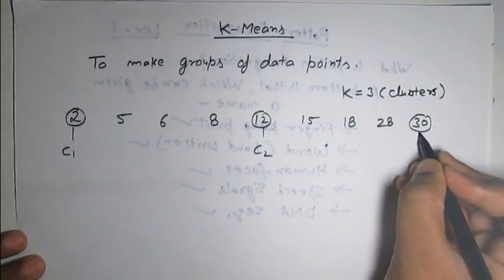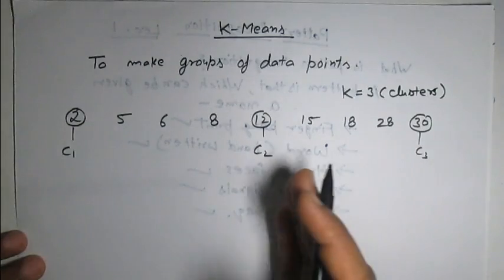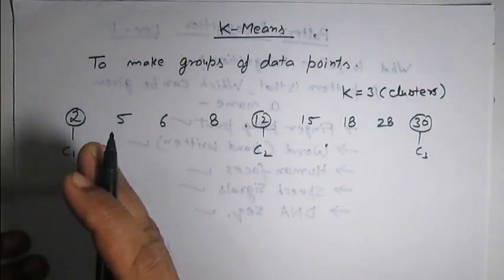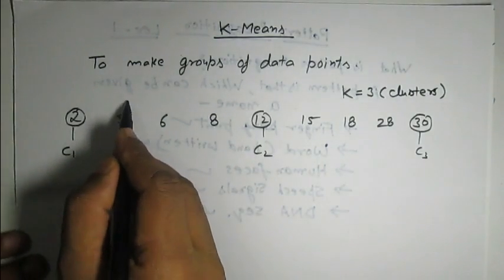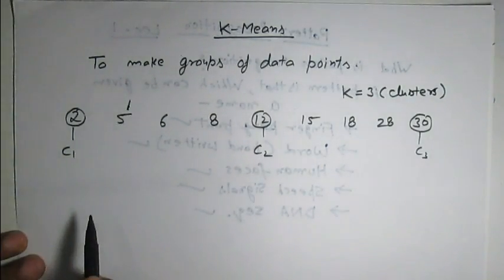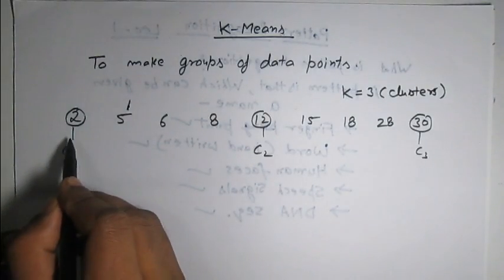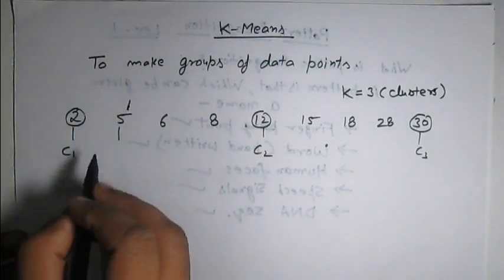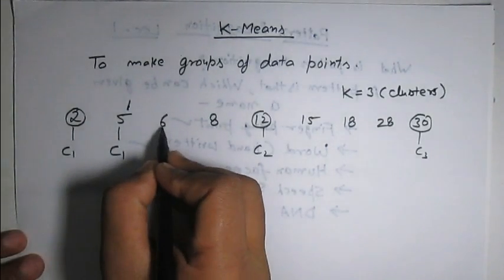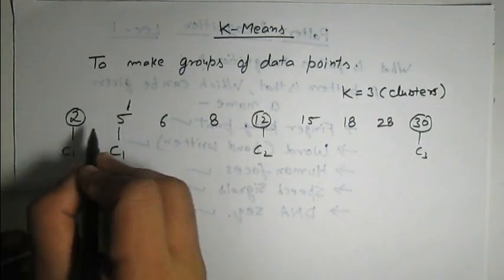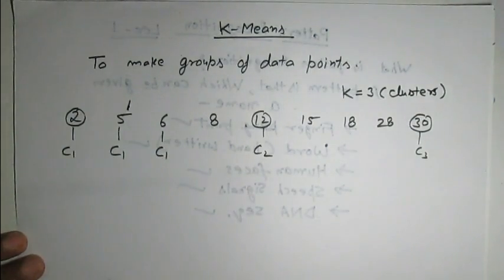Now we have to consider all the data points and see which cluster each point is closest to. For example, if we consider this 5, we can see that 5 is closest to C1, so we assign this 5 the label of C1. Similarly, consider this 6 — this is also closer to C1, so we assign label C1 to this point.